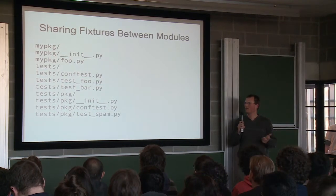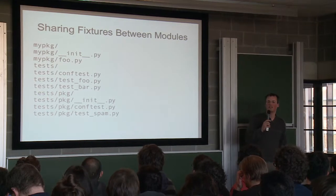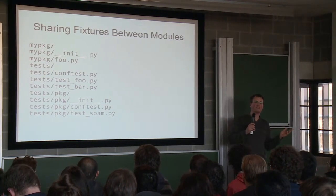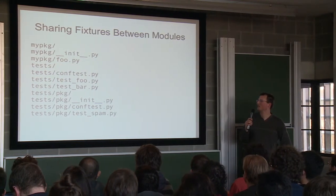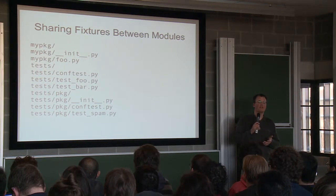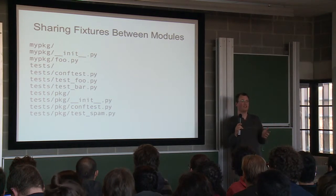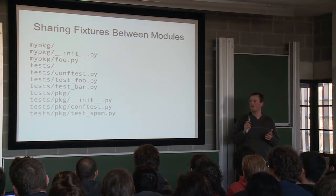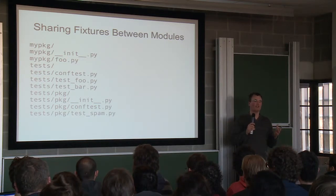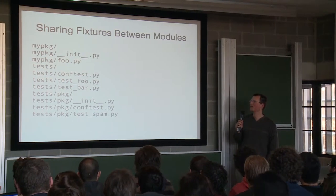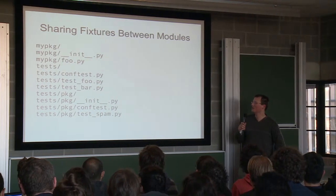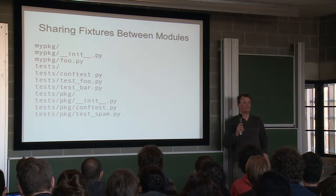You have to start thinking about your whole test structure. This is a fairly classical layout of a Python package, where you have your package and then your tests in a separate directory. The main thing to point out is the conftest.py file in the test directories. conftest.py is another concept PyTest uses — it's basically a per-directory plugin for PyTest. You can use PyTest hooks as well as fixtures in conftest.py. If you create a fixture in the top-level conftest.py, all your tests will be able to see those fixtures. If you create fixtures in a subdirectory's conftest.py, then only the modules in there will be able to see those fixtures.